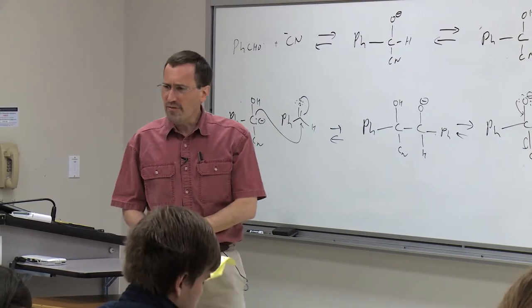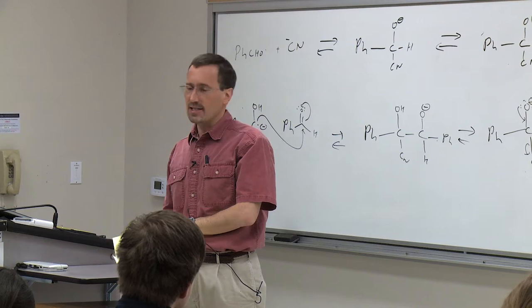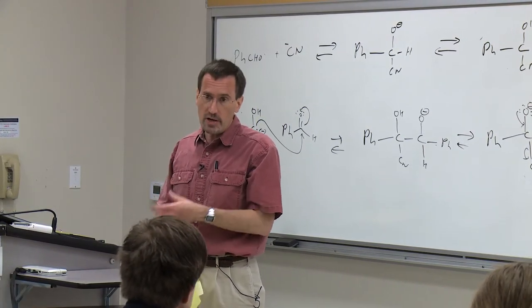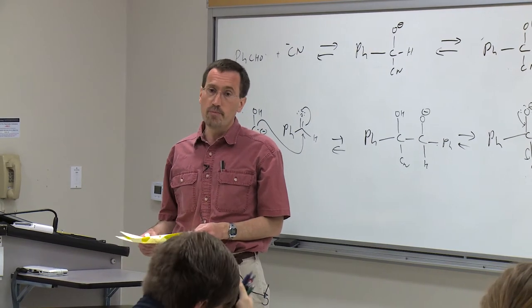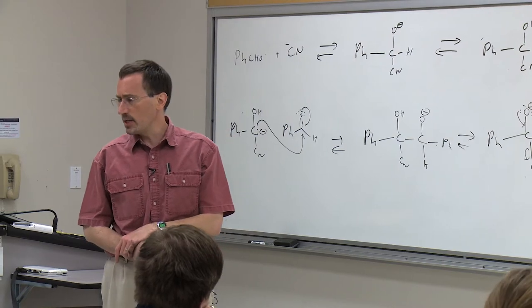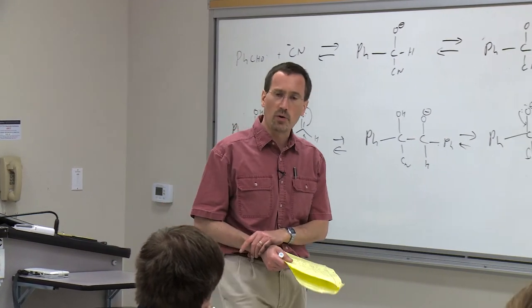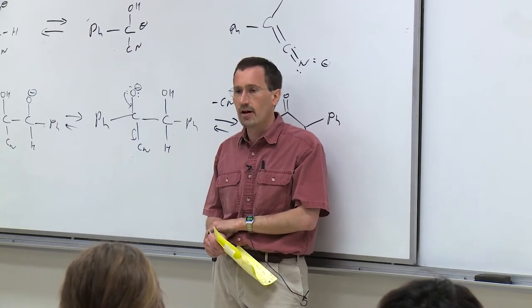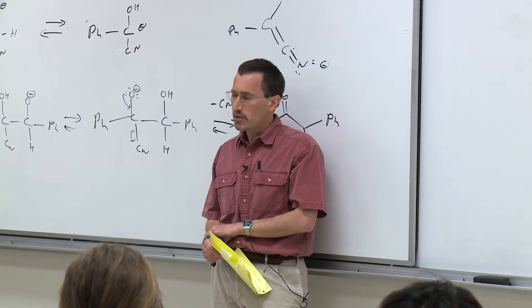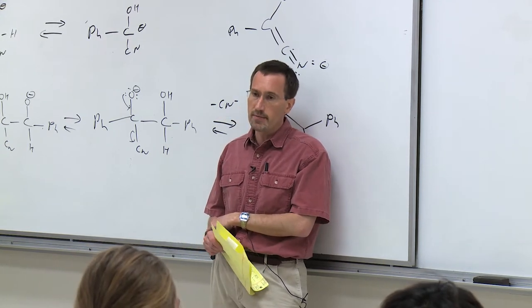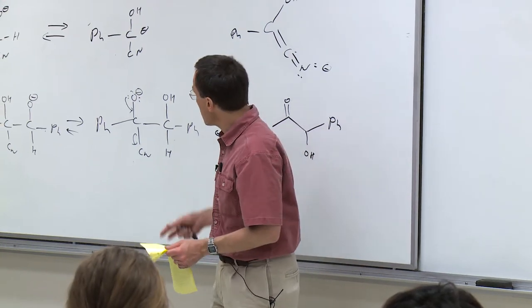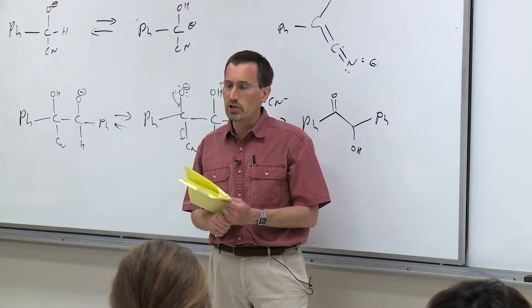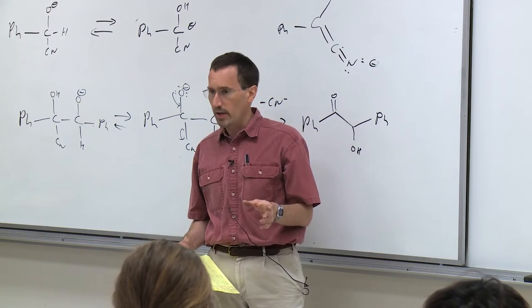Whenever nature presents something useful, organic chemists want to exploit it. I've already mentioned the name Gilbert Stork—really one of the great synthetic organic chemists of the early part of the second half of the 20th century. We already saw his chemistry with enamines. Gilbert Stork was also taken with the cyanohydrin reaction and wanted to exploit it, to control it, and use it to build upon.